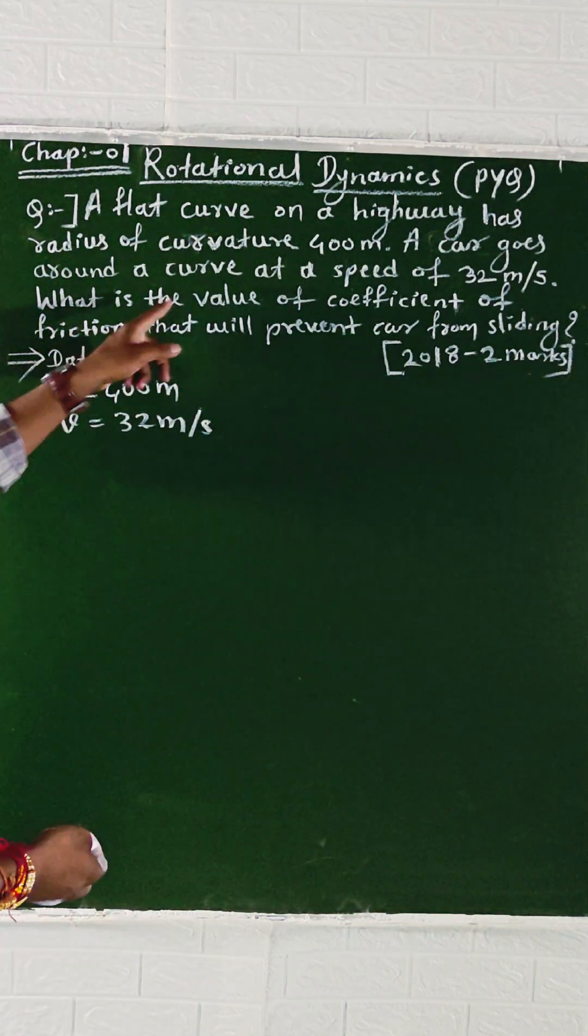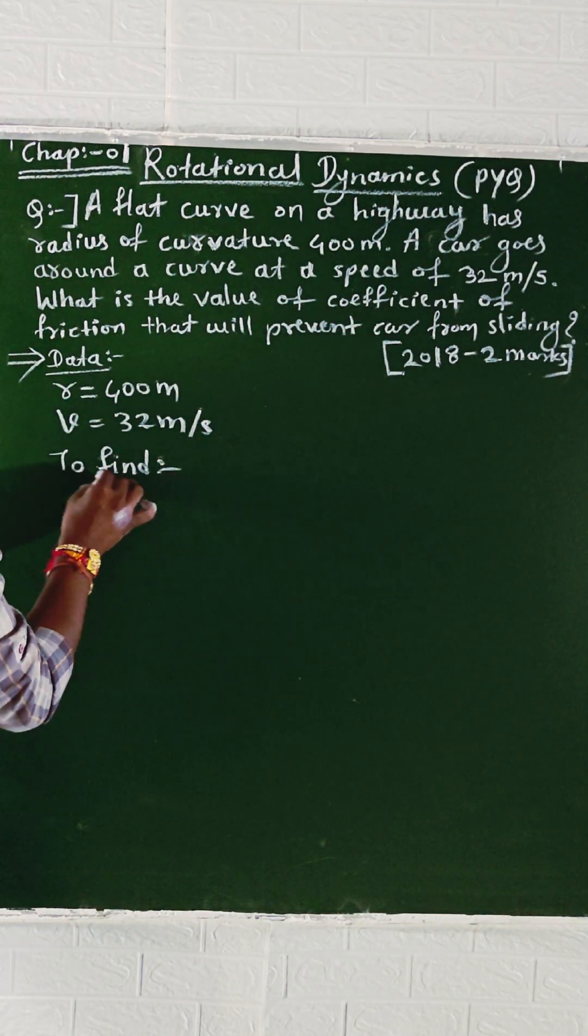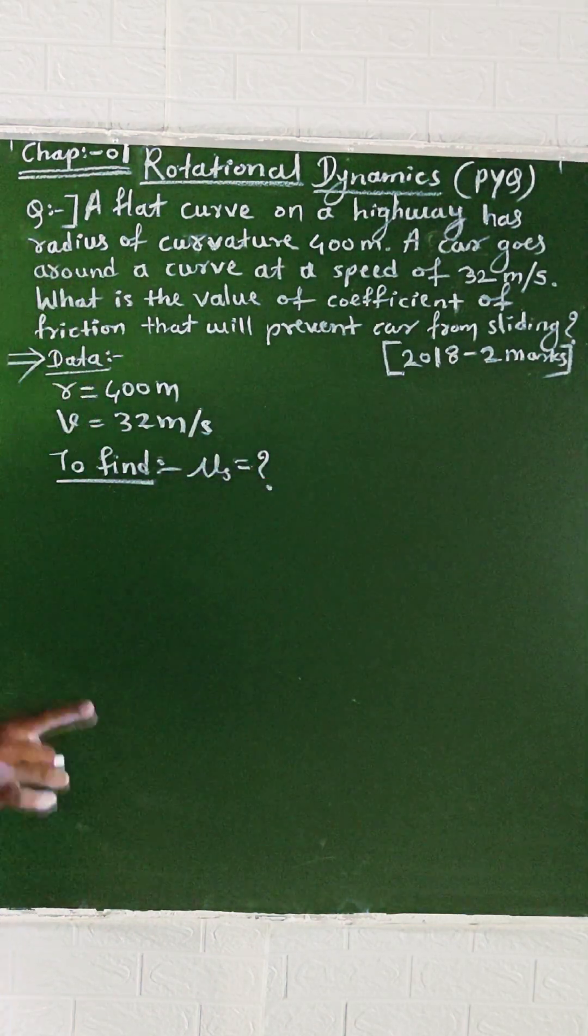What is the coefficient of friction to find? The coefficient of friction, mu, is equal to question mark.